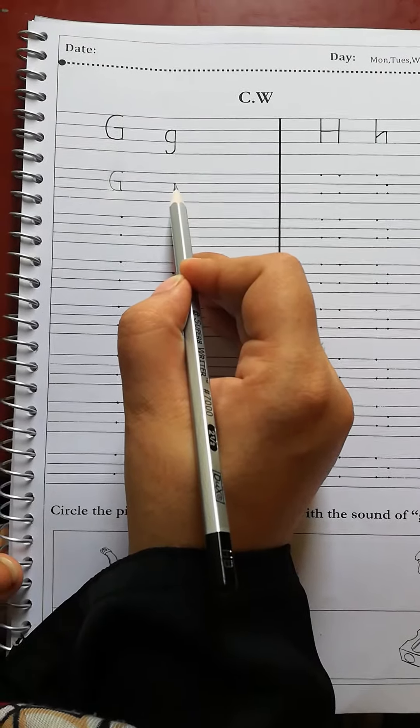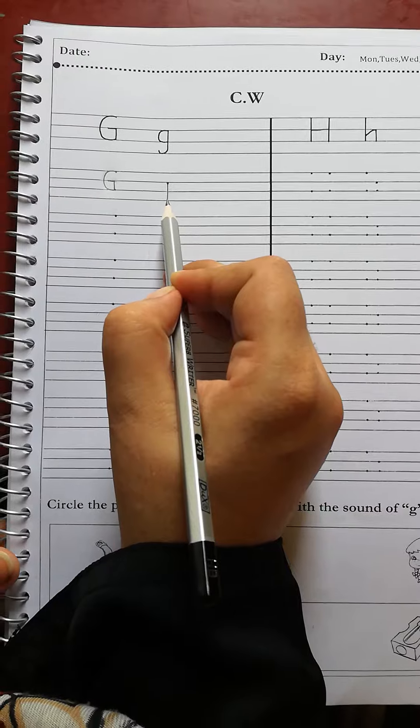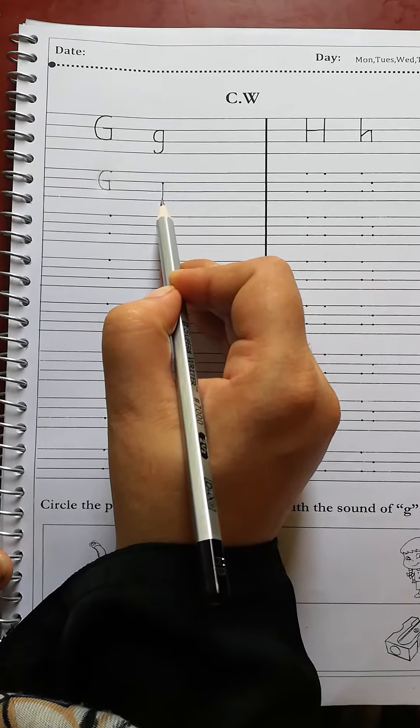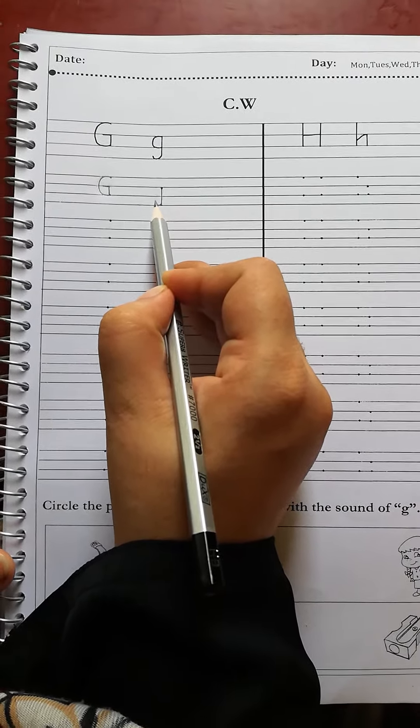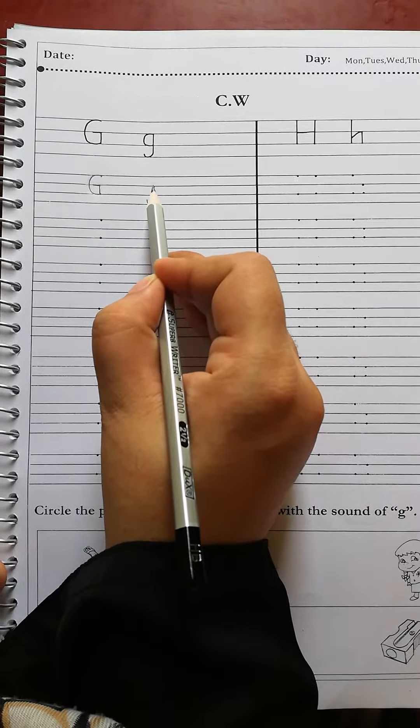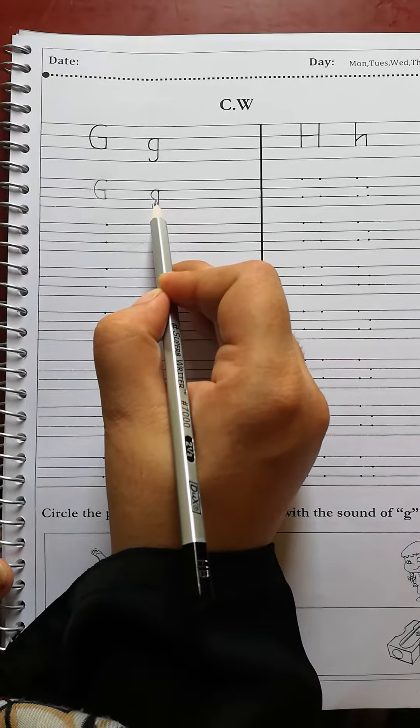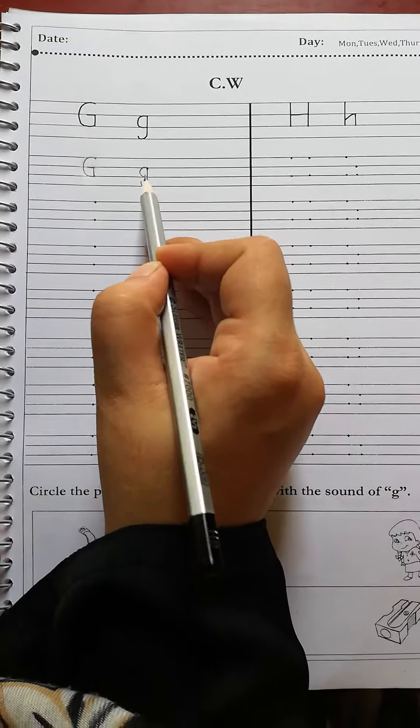And draw a straight line to the second dot and make a small curve. Again, we put the pencil on this one dot and make a small belly between two lines like this. It's a small g.